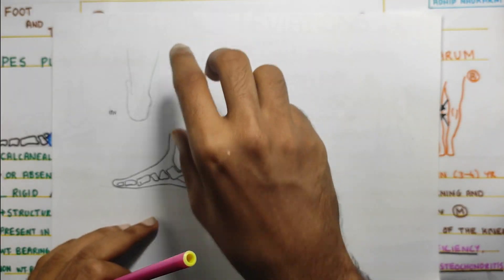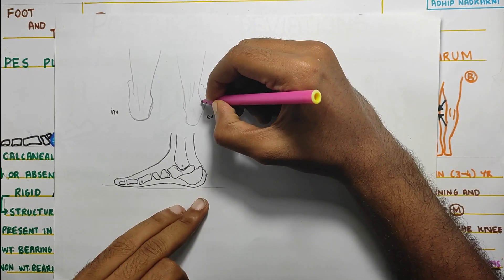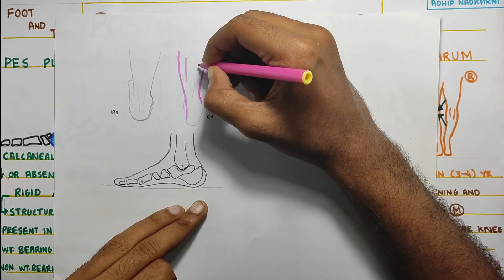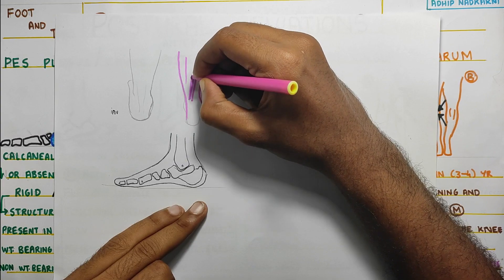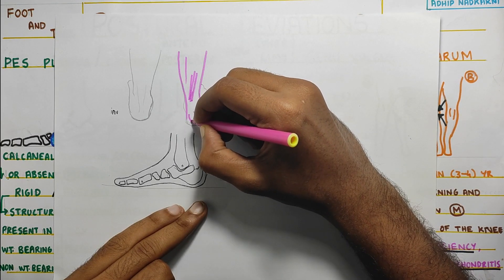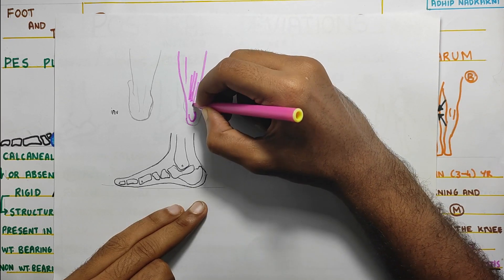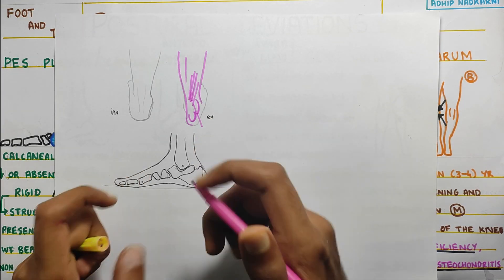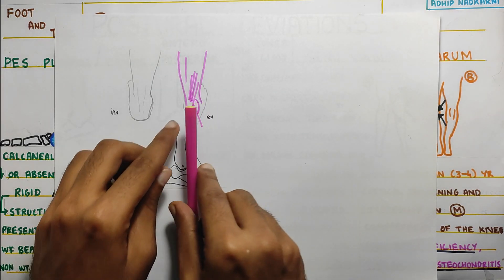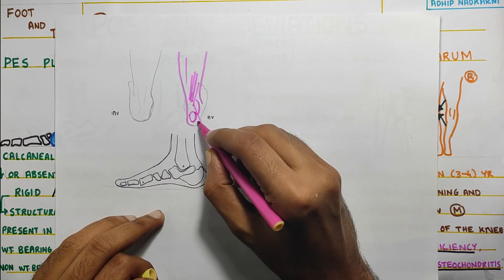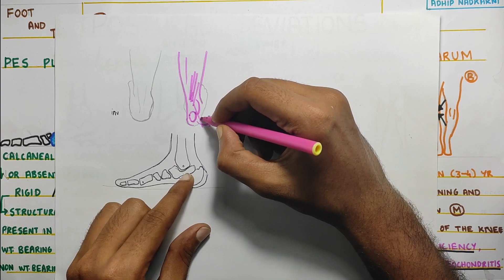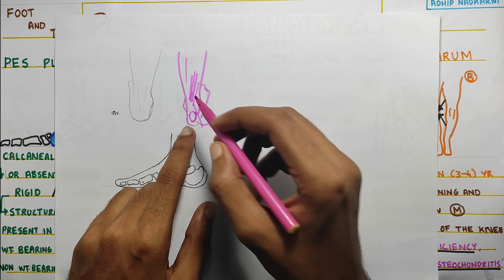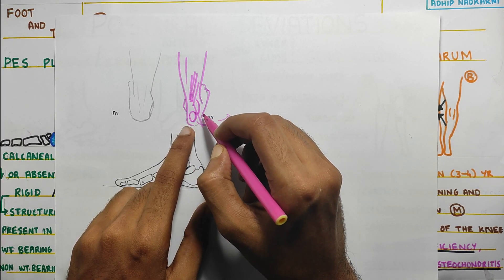If you see the foot from the posterior view, you will see the calf coming from the top and your TA is here. Your calcaneum is here, and it is forming this angle which is basically putting your calcaneum outward. The circular part of the calcaneum is going in this direction. This is the lateral part of your foot and this is the medial part — so your calcaneum is going for eversion, and this is commonly seen in flat foot.